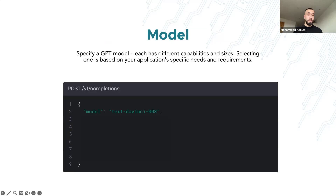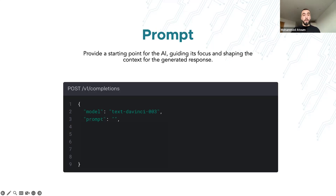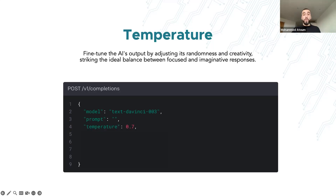The first parameter is the model — you specify which model to process the request through, for example text-davinci-003. Then you add the prompt, which is your input text or question for the GPT model to respond to. The temperature parameter is particularly interesting — it influences the randomness and creativity of the AI-generated text. It ranges from 0 to 1, where higher values like 0.9 produce more diverse and creative outputs, while lower values like 0.1 produce more focused and deterministic responses.